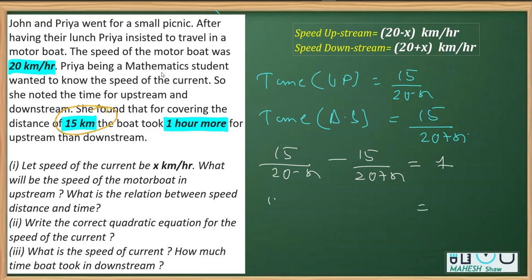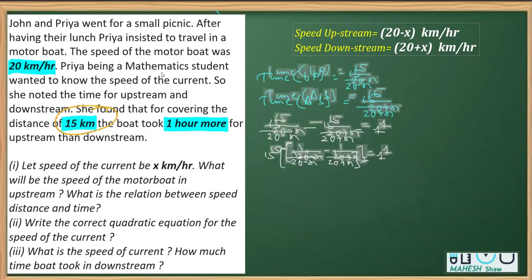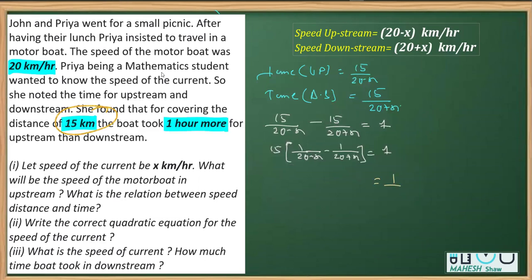Now I can take 15 common from here. So it's going to be 15 times 1 over 20 minus x minus 1 over 20 plus x is equal to 1. Later, I can transpose this on the other side. Now, what I'm doing is transposing 15 to the other side. So it will be 1 over 15, and on this side we'll have 1 multiplied by 20 plus x minus 1 multiplied by 20 minus x. We can see that 20 and 20 get cancelled. On the further simplification, we have numerator as 2x and denominator by applying a plus b into a minus b identity, a square minus b square. So 20 square, which is 400 minus x square is equal to 1 over 15.